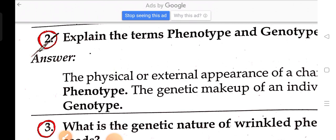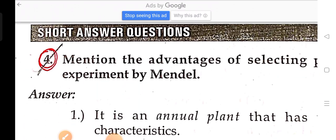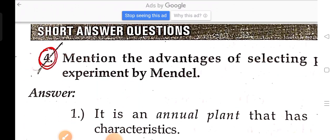Explain the terms phenotype and genotype. What is the genetic nature of a wrinkled pea seed? Mention the advantages of selecting pea experiment by Mendel.